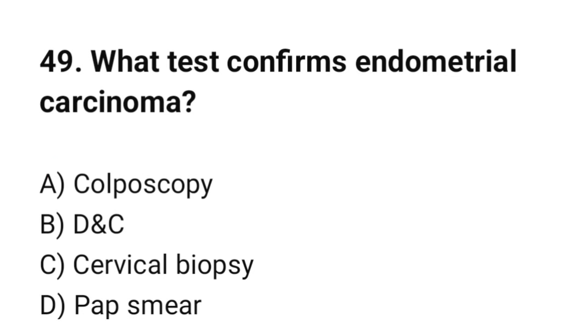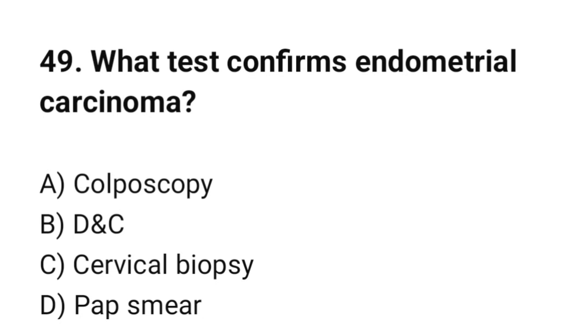Question number 49. What test confirms endometrial carcinoma? The correct option is B: D&C (Dilation and Curettage).